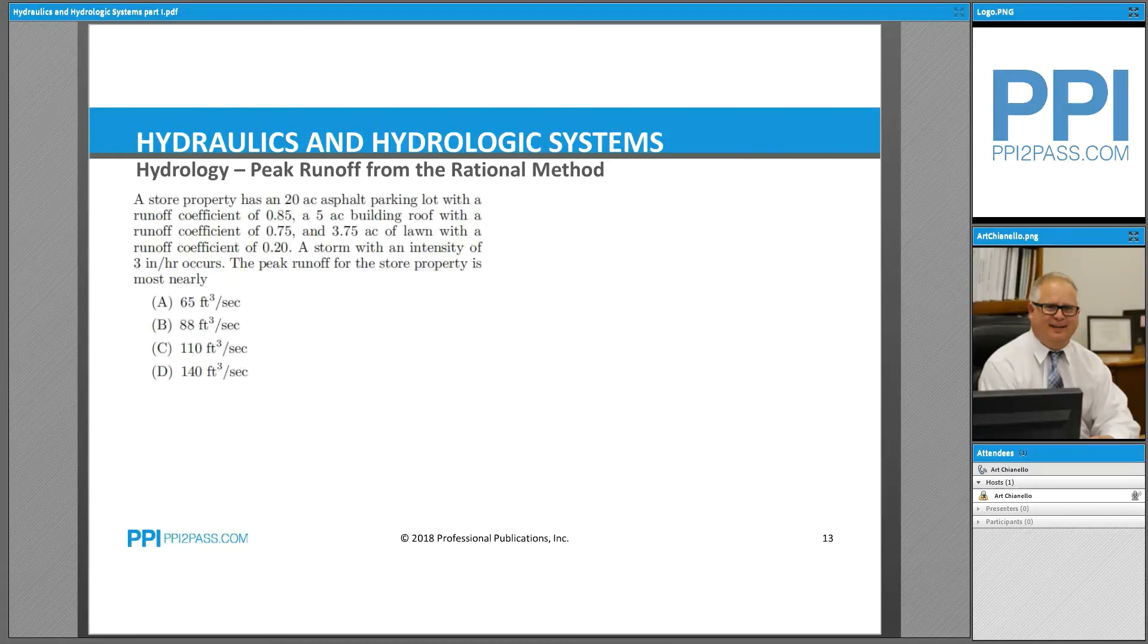A store property has a 20-acre asphalt parking lot with a runoff coefficient of 0.85, a 5-acre building roof with a runoff coefficient of 0.75, and 3.75 acres of lawn with a runoff coefficient of 0.20.